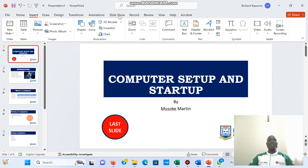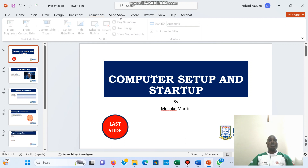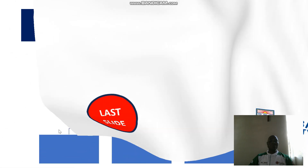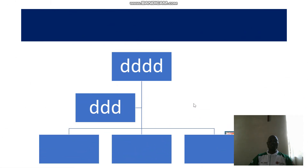Now if I go back and run my slideshow, the moment I hover over the button you can see the hand cursor — that shows it is an active button. When I click on it, it will take me straight away to the last slide.